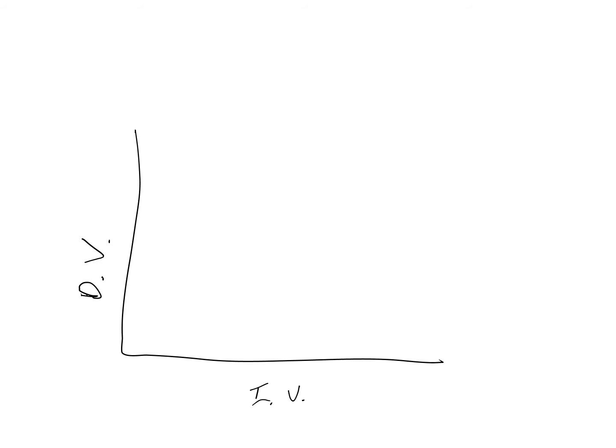For a scatter plot, the dependent variable is usually on the y-axis, and the independent variable is usually on the x-axis. The plot is then populated with dots or points, each one representing a sample member's value for the independent and dependent variable. For example, the sample member represented by the circle dot might have a value of 100 for our dependent variable and a value of 50 for our independent variable.